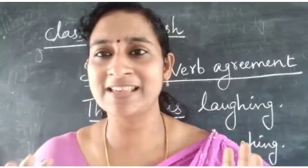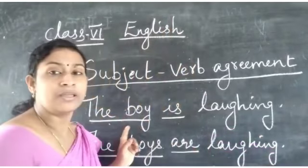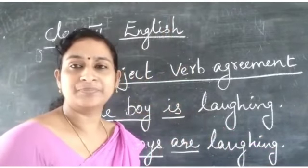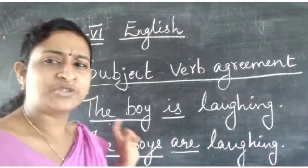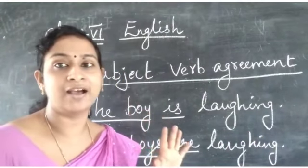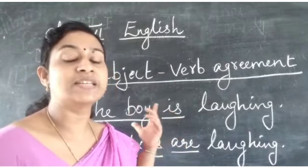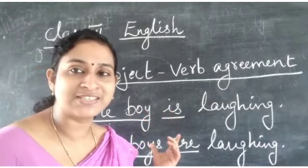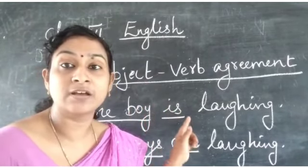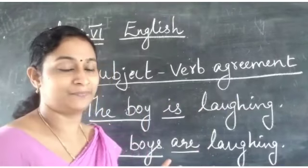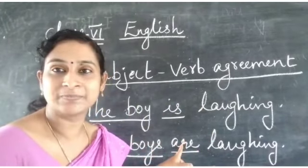Let's look at some examples. 'The boy is laughing.' The boy — is it singular or plural? It's singular. So, if the subject is singular, the verb must also be singular. So, 'the boy is.' Got it?